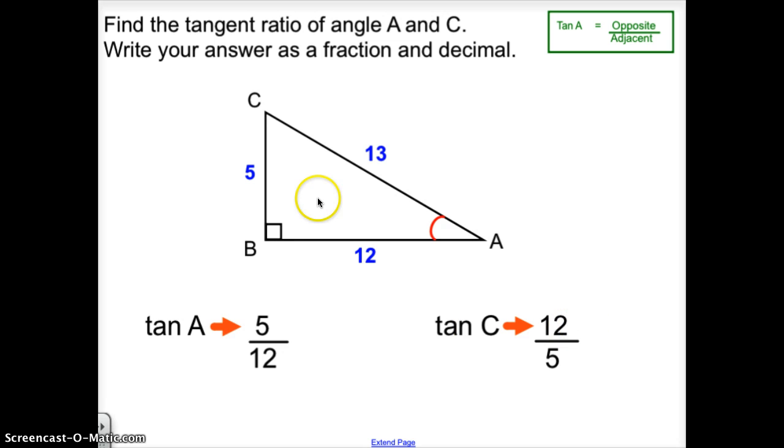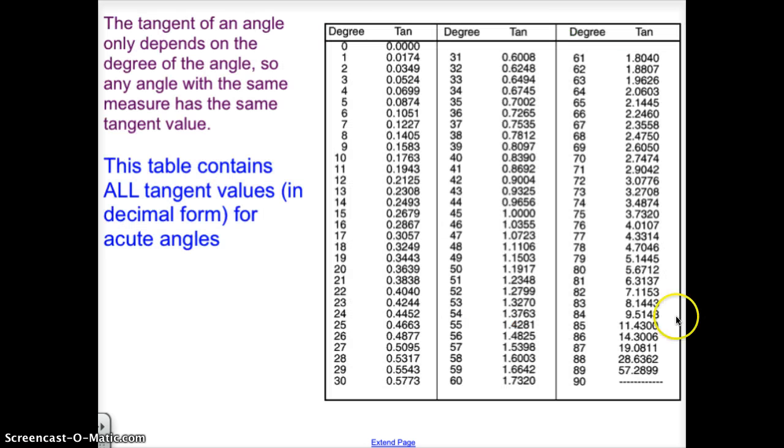Tangent C is simply the reciprocal of that, because now the opposite side is BA at 12, and the adjacent side is 5. So 12 fifths is 2.4. We go back to the table and find that 2.4 is closest to 67 degrees, 2.3558. So 67 degrees would be the other angle.